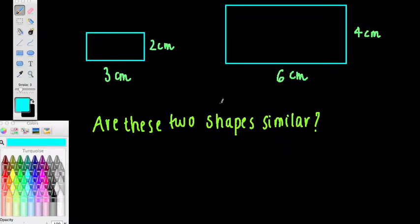Are these two shapes similar? Well, for starters, we have two rectangles. So we know what is the angle in here? 90 degrees. And we know that in a rectangle, all of these angles here will be 90 degrees. That's not enough to say that these two shapes are similar though.